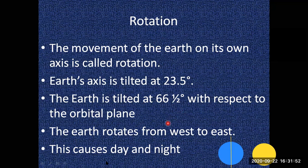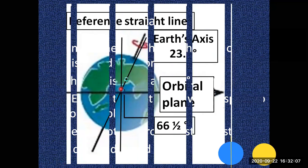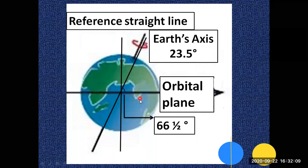This causes day and night. The Earth is spherical, so this is not just a line. When the sun's rays fall on it, the line that separates the day from the night is called the circle of illumination.